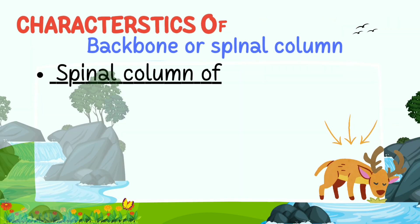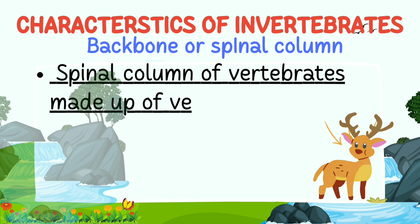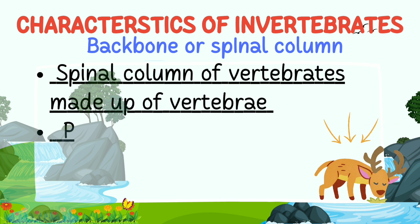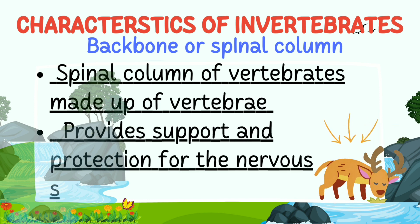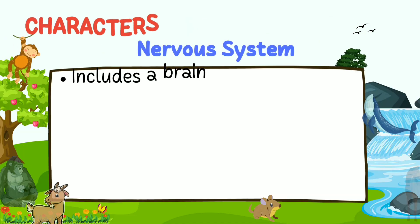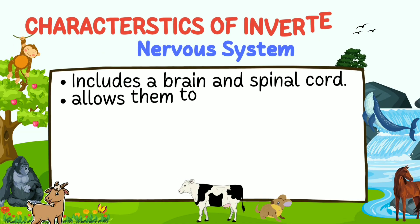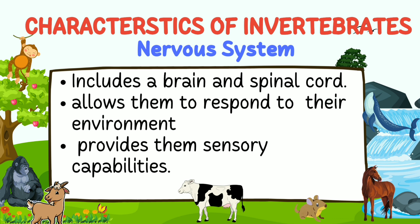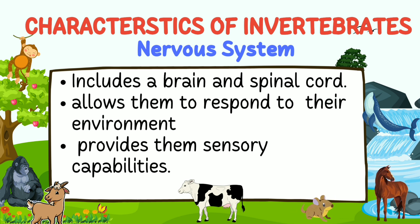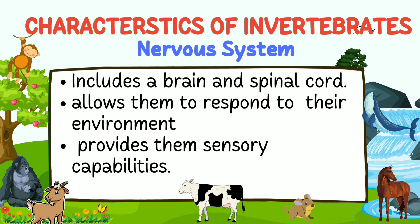The spinal column of vertebrates is made up of vertebrae which provides support and protection for the nervous system. Vertebrates have a well-developed nervous system that includes a brain and a spinal cord, allowing them to respond to their environment and providing sensory capabilities.